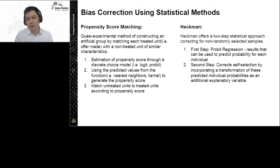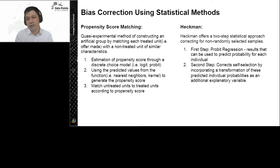Why do we use bias correction instead of A/B testing? Because A/B testing is super expensive and usually time consuming. An alternative is to use statistical methods. There are two methods I recommend: propensity score matching, which is a quasi-experimental method that constructs a treated and non-treated group, and the Heckman method, which is more of a statistical method that corrects the mistakes by using a proper regression to predict probability and then corrects for self-selection in the second step.